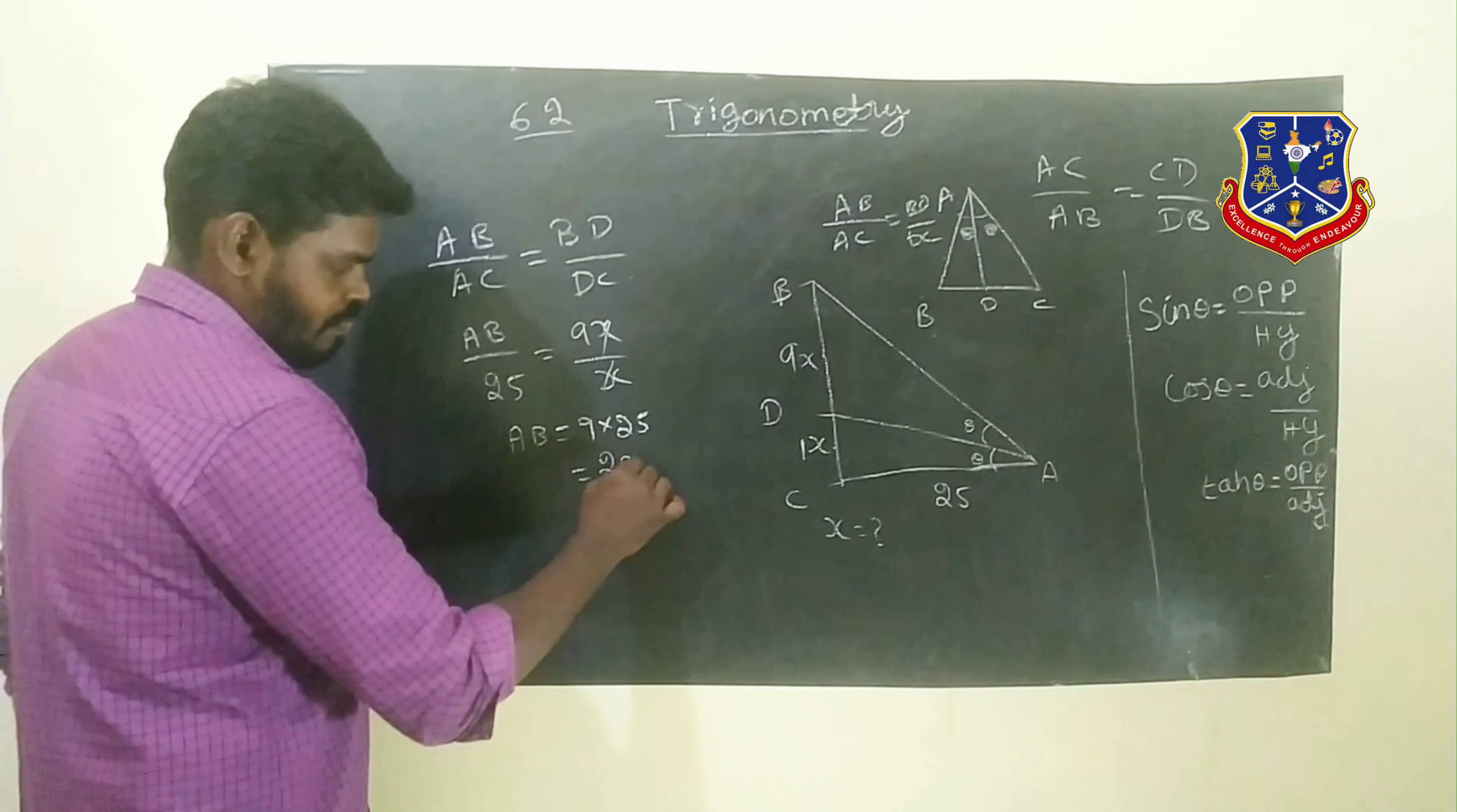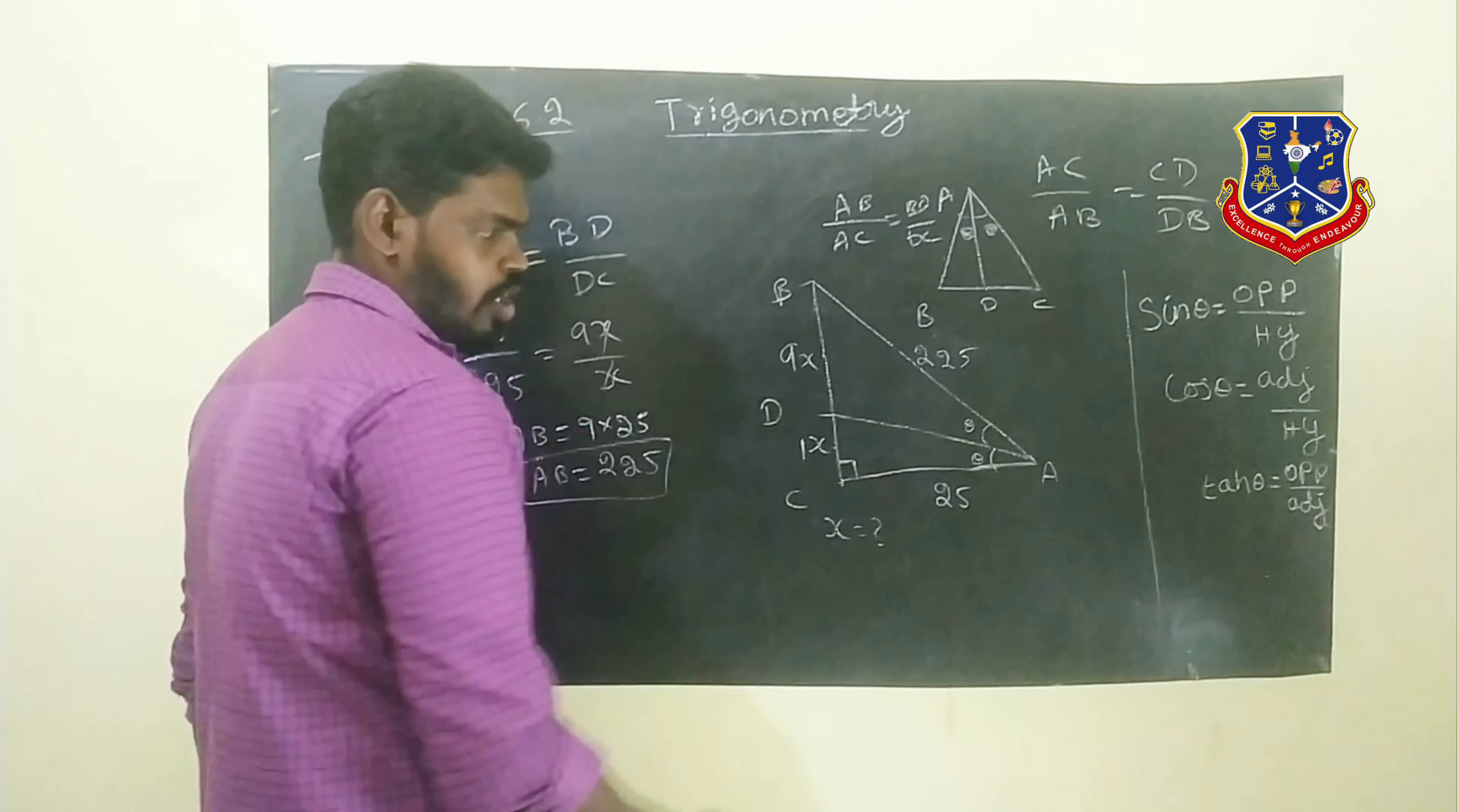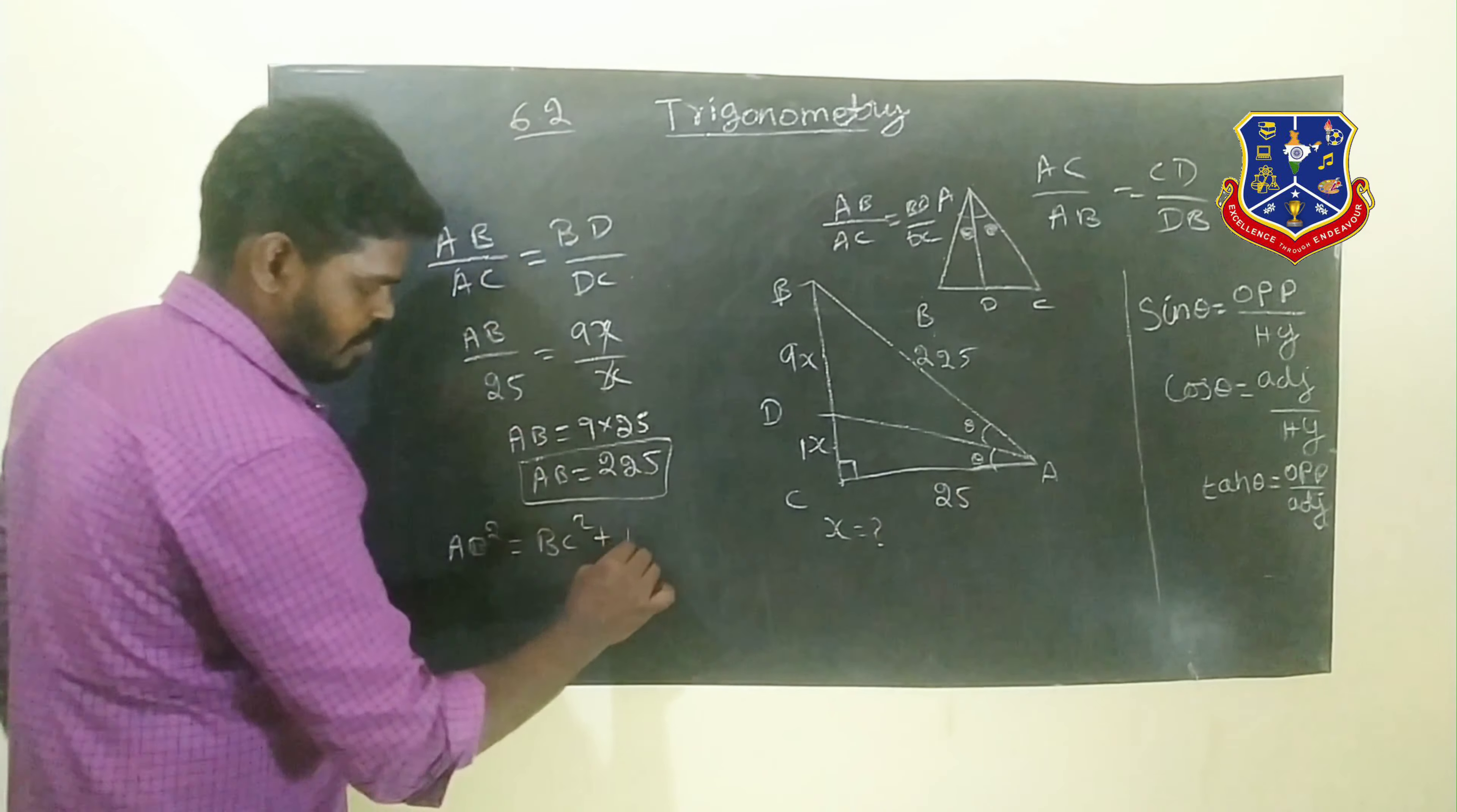AB value is 225. Now this is a right angle triangle because the pole is fixed to the ground at a 90-degree angle. We can use the Pythagorean theorem: hypotenuse squared equals opposite side squared BC squared plus adjacent side squared AC squared.